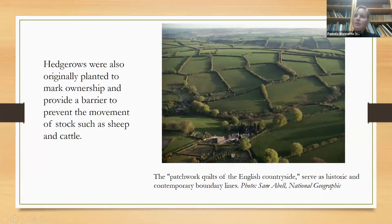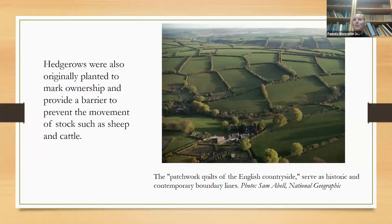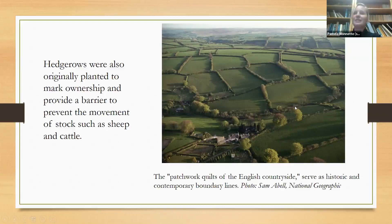Hedgerows were also used for defense — they planted these large physical barriers to help keep enemies out. While that might not be a function in today's world, it's really interesting history. You can see pictures of the patchwork quilt English countryside where you can actually see where the property boundary lines are. The hedgehog also got its name from the little animal that lived in these hedges as habitat.